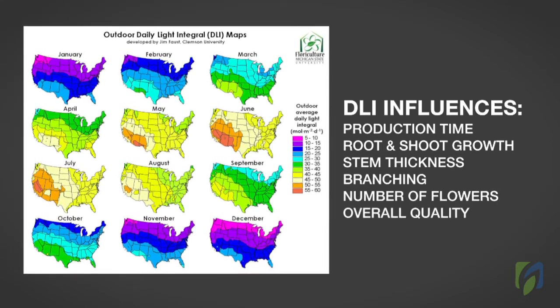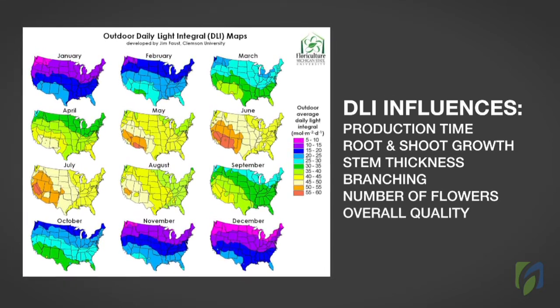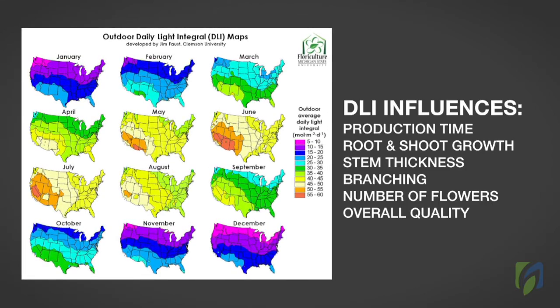Growers who monitor and record the DLI received by their crops can determine whether they need to provide supplemental light or shade their plants.